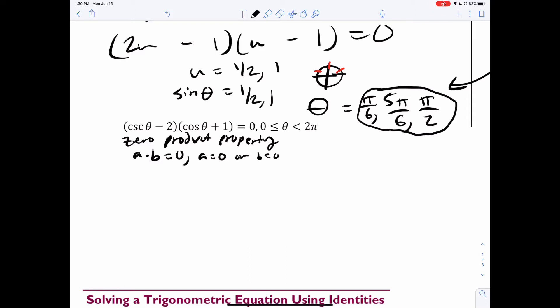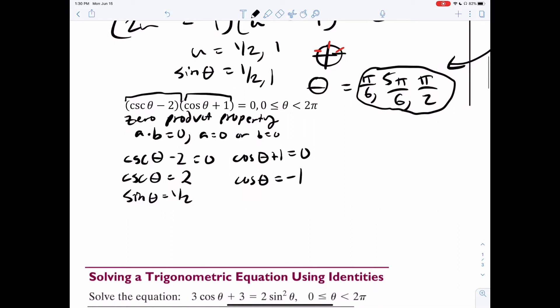So we're just going to take this thing right here. This thing must be zero. Or the other thing, cosine theta plus one must equal zero. So cosecant theta equals two, which means sine theta should equal one half. Cosine theta is negative one. And now we solve it.